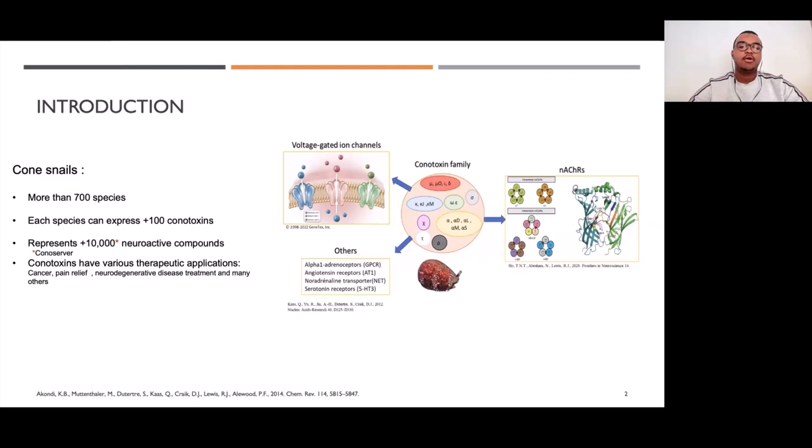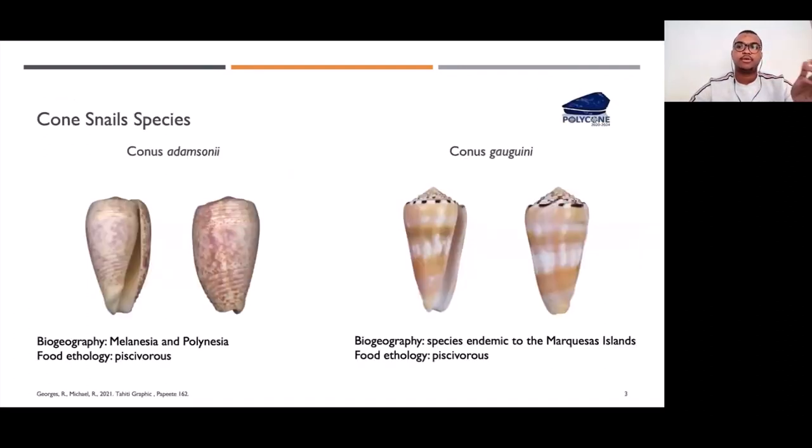Nowadays, we know that there are over 700 species of cone snails and each of them can express more than 100 conotoxin peptides in their venom, making them valuable resources for biological interest and therapeutic potential. So for my thesis project, we are focused only on Polynesian endemic cone snails from French Polynesia. And for the rest of the presentation, the conotoxins I will present to you were identified from these two cone snails, Conus adamsoni and Conus gorgon.